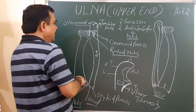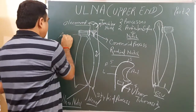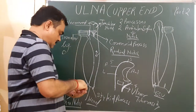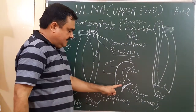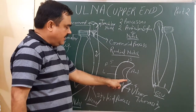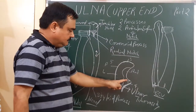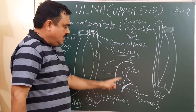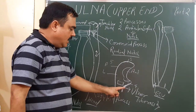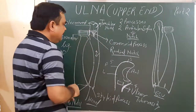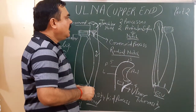The coronoid process has four surfaces: the superior surface, which is articular and forms the trochlear notch; the lateral surface, which is articular and forms the radial notch; the inferior surface, which forms the ulnar tuberosity; and the medial surface. That is all about the upper end of the ulna. Thank you.